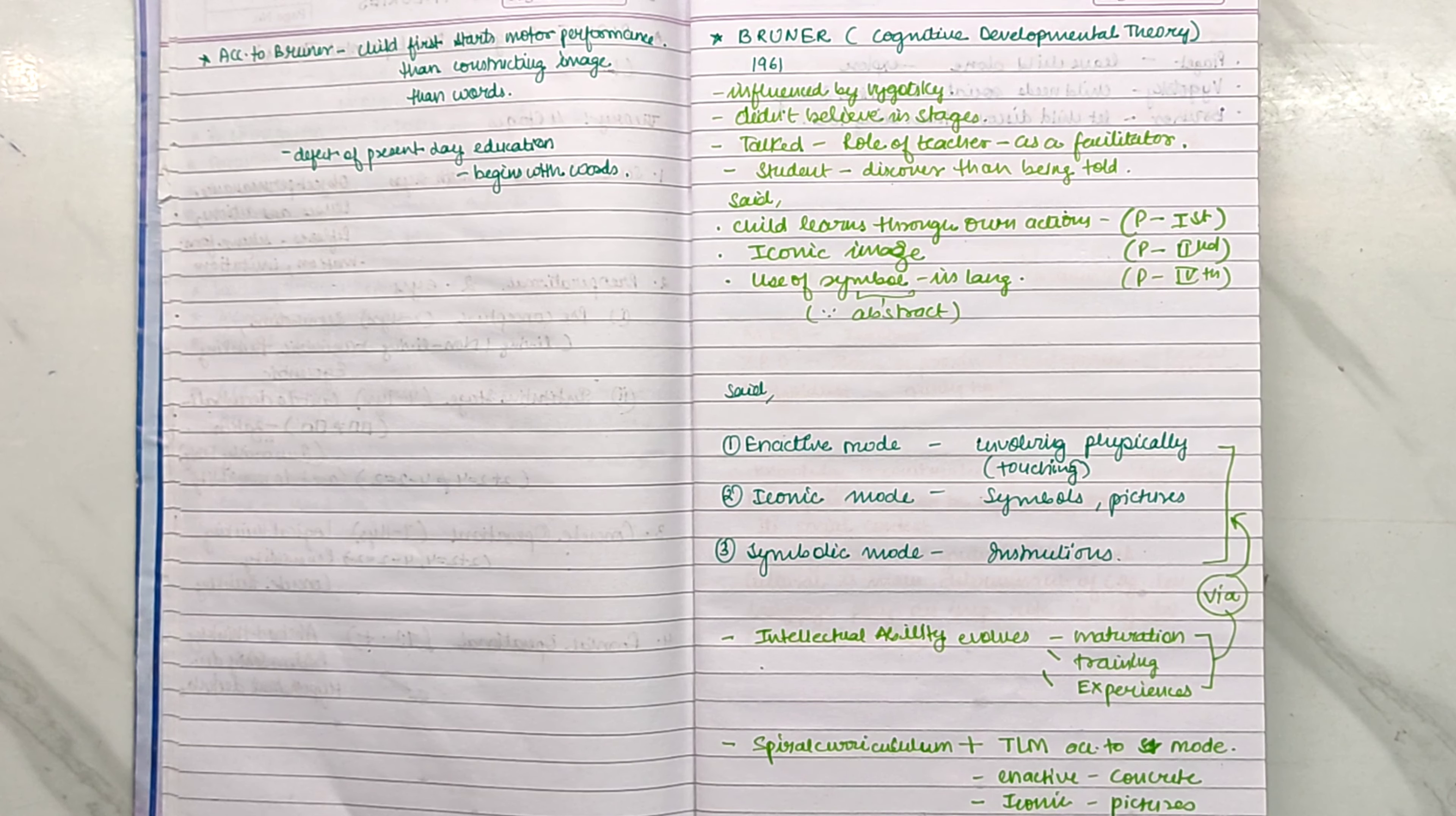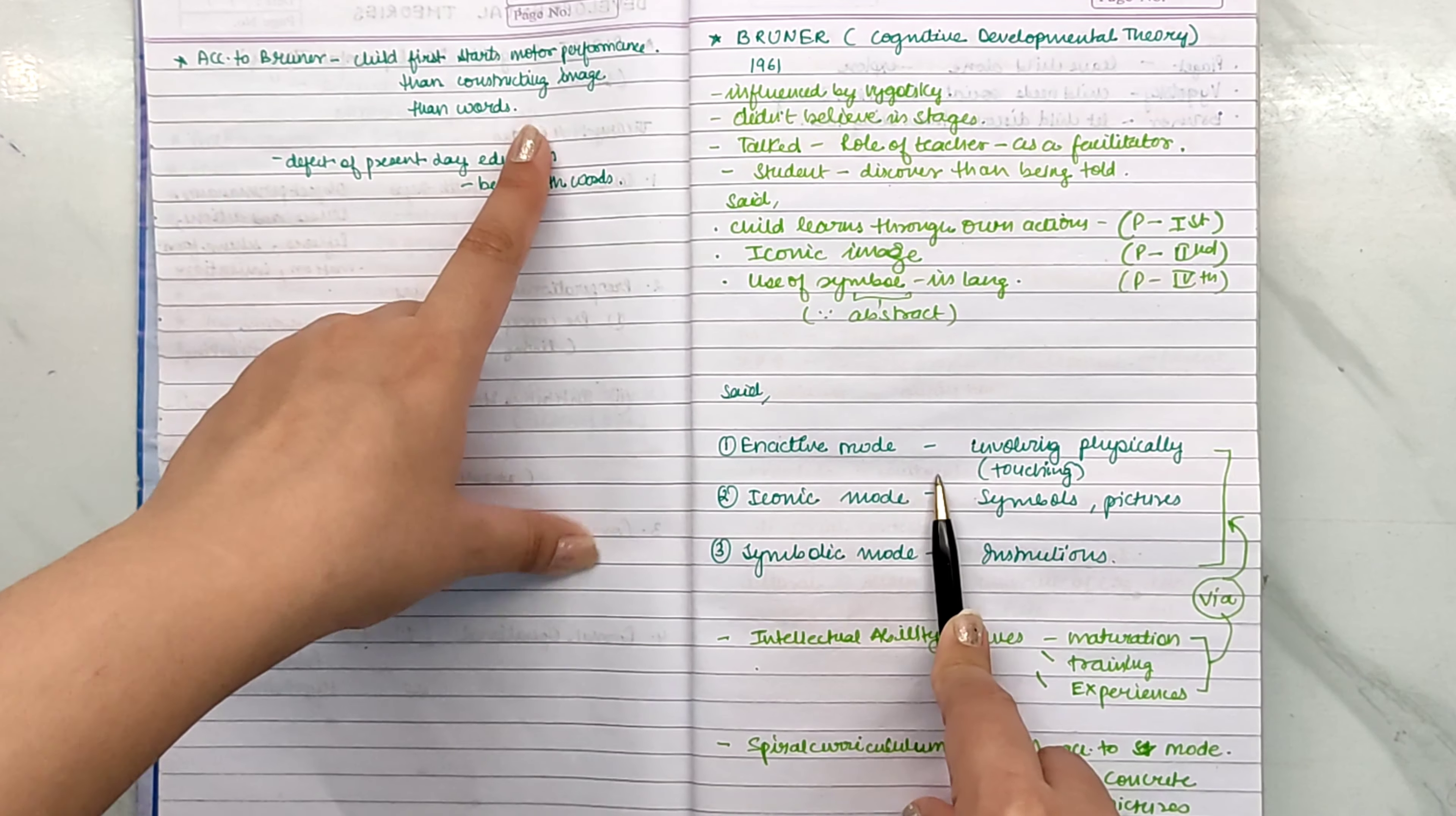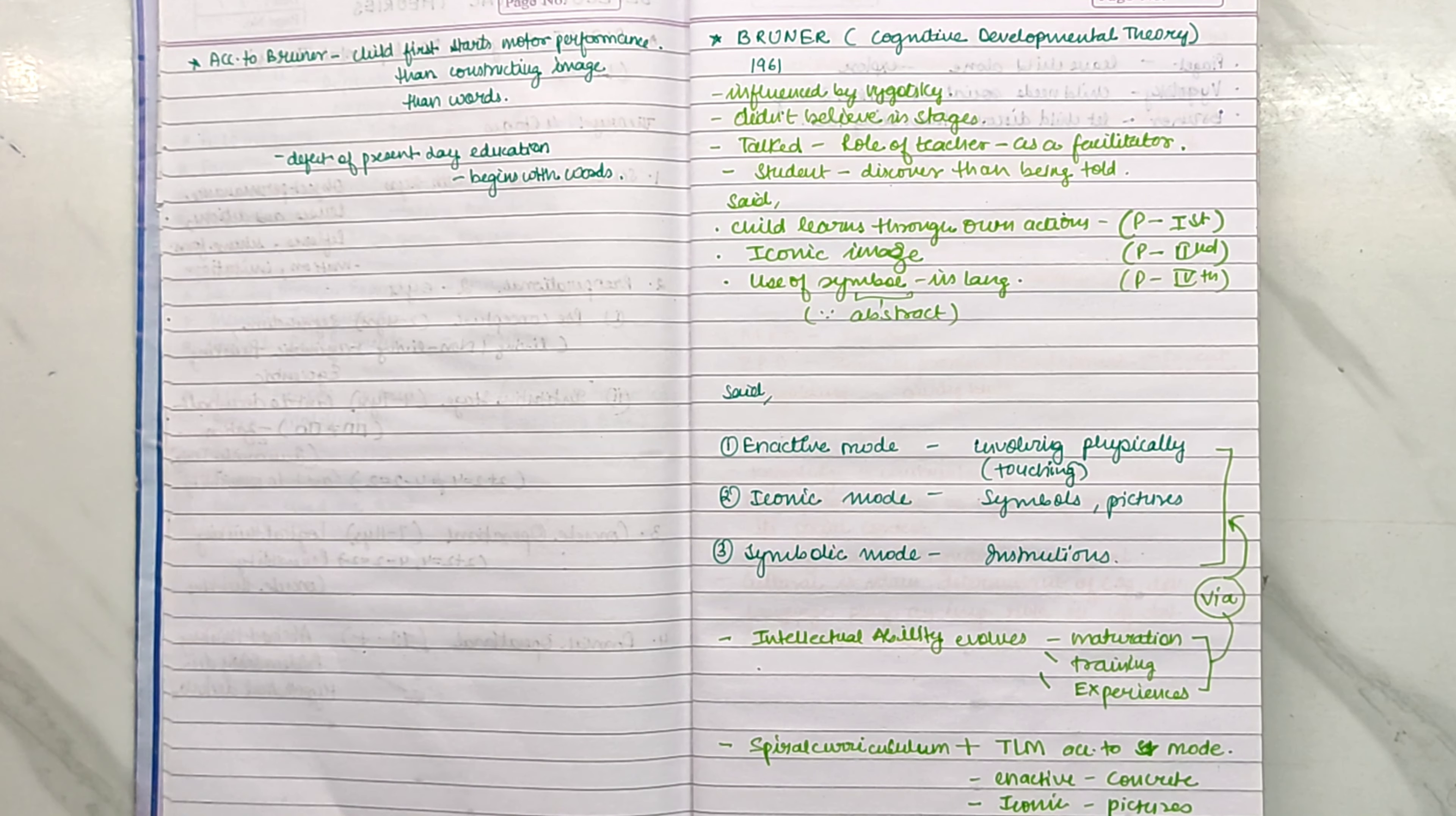The defect of our present education system is that it starts with words. Rather, it should begin with motor activities, and it will be more helpful to our preschool kids. Because according to Bruner, child first starts motor performances, then constructing images, then words. And this is the defect of present-day education. It begins with words rather than beginning with motor performances. Now there is a lot of change, but initially it didn't happen. So it started from ABCD, which was wrong. So this was Bruner's Cognitive Developmental Theory.